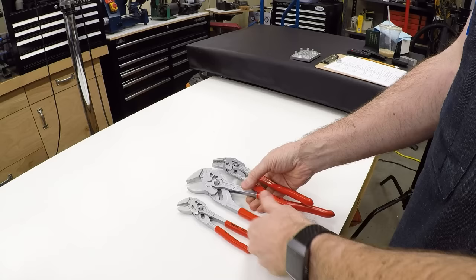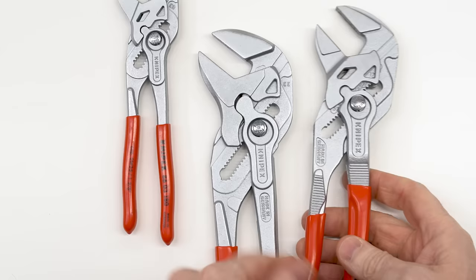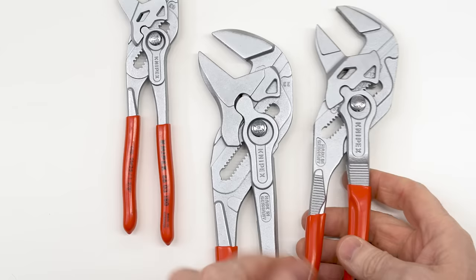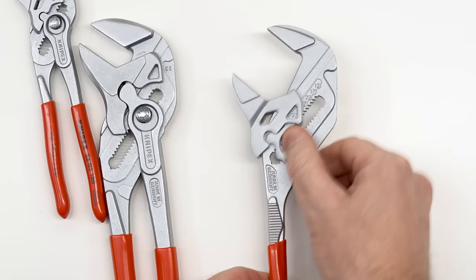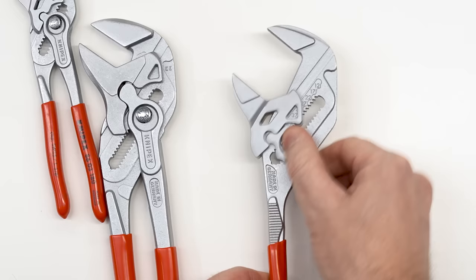And number eight is Knipex Plier Wrenches or Knipex, depending on how sophisticated or German you are. If you've never used these, you are really missing out. They're not cheap, but they are very nice and really handy. So this is an adjustable wrench. And you can see they adjust over a fairly large range. But it's also a parallel jaw plier so that when you squeeze it, these squeeze down parallel.